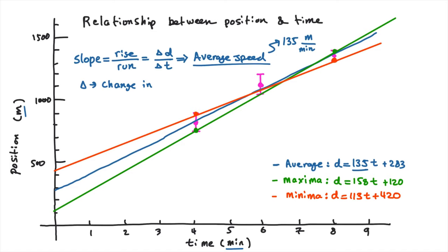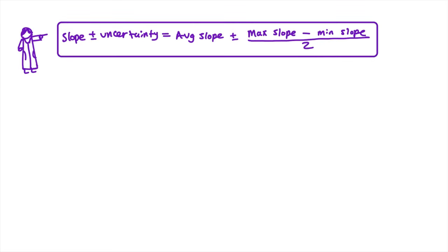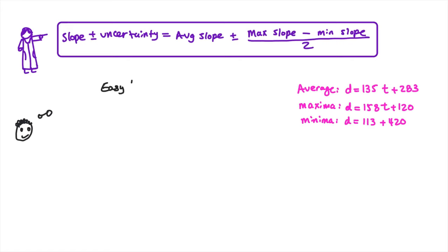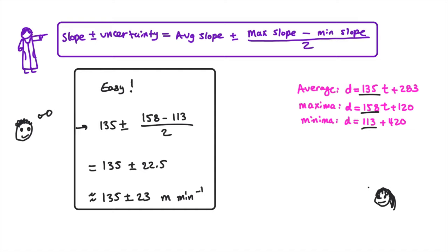For the minima line — the lowest possible slope — use the upper bound of the first value (average plus uncertainty) and the lower bound of the last measurement (average minus uncertainty), then connect and find the equation. Robo's group found the minima equation to be d = 113t + 420. This means the maximum average speed was approximately 150 meters per minute and the minimum was approximately 113 meters per minute. Baba calculated the average speed and uncertainty as 135 ± 23 meters per minute using the formula: average slope ± (max slope − min slope) / 2.